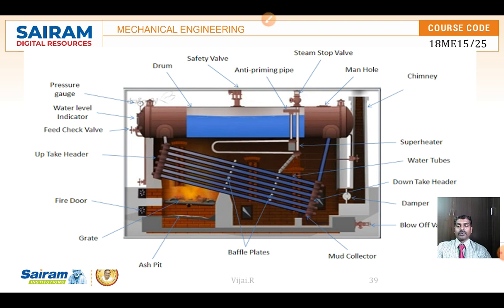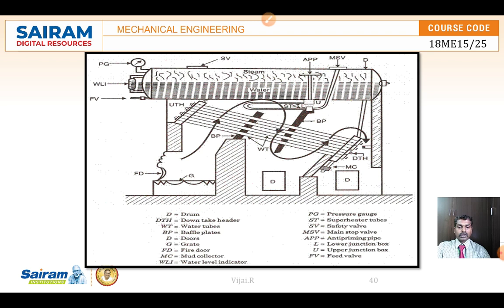The zigzag movement of hot flue gases created by the baffle plates means the gases spend more time around the tubes, providing more heat so the water gets heated efficiently and becomes steam. The steam is then separated in the boiler drum at the top. You can see the water level indicator on the left, the fusible plug, the feed valve where water is fed in, and the main steam valves at the top of the boiler to send steam to the turbine.